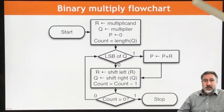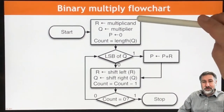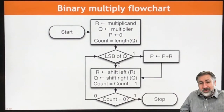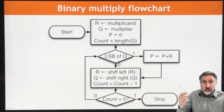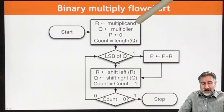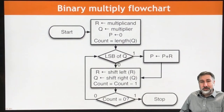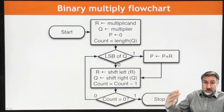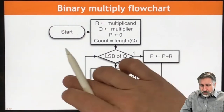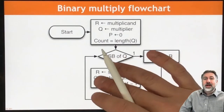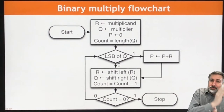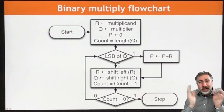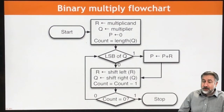The way this is going to function is we start by initializing our registers to have the values we're interested in. Let's assume that register R is going to have our multiplicand, register Q is going to have our multiplier, and register P — which holds our partial products — will initialize to zero. Somewhere in the control logic we're going to need a counter, and we're going to initialize that counter to the size of the numbers we're multiplying, because we want to do this for every bit in the multiplier, one bit at a time.